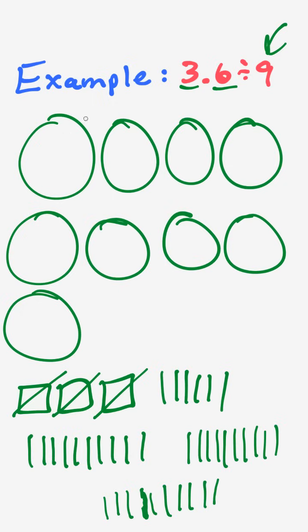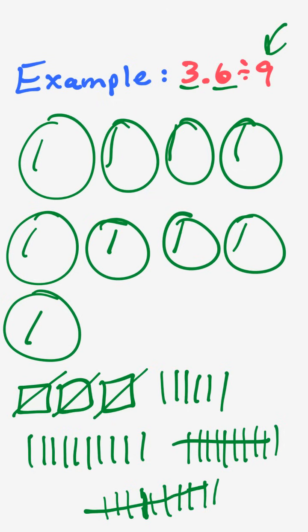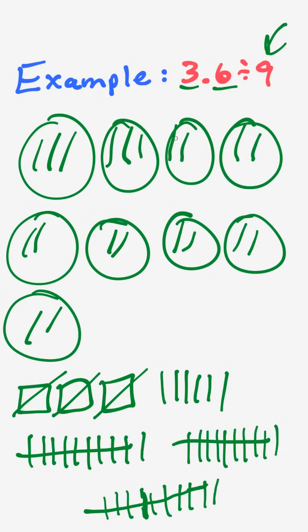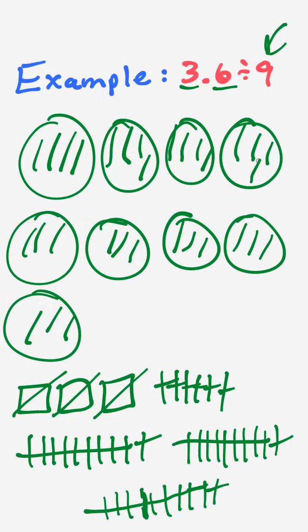Now I distribute those amongst the groups in sets of nine. It's easy because each set is ten, so I cross off all of them except the last one per set. Distributing four complete sets of nine tenths each — one, two, three, four, five, six, seven, eight, nine — repeated across all sets until all thirty tenths are distributed.